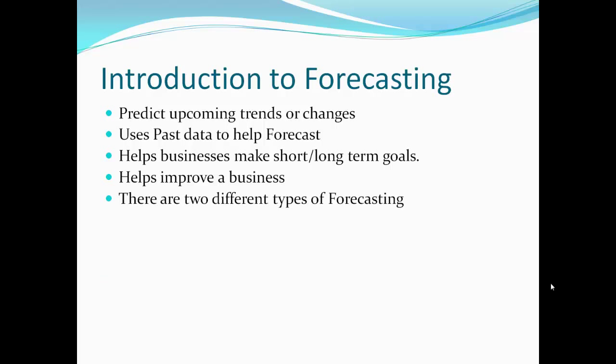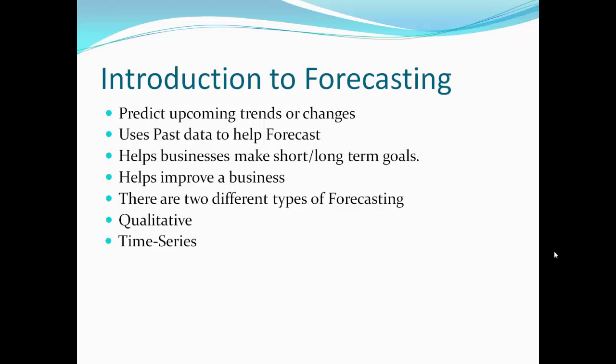There are two main methods of forecasting. The first is qualitative models, where the business will try to include the majority of factors, for example consumer habit changes. This means that if they research and speak to customers, for example through using questionnaires, they will learn what the customers want and what their needs are. They are then able to predict what the customers want, therefore increasing sales in the future by supplying the customers what they want.